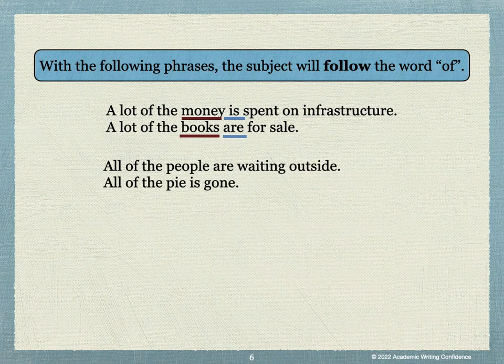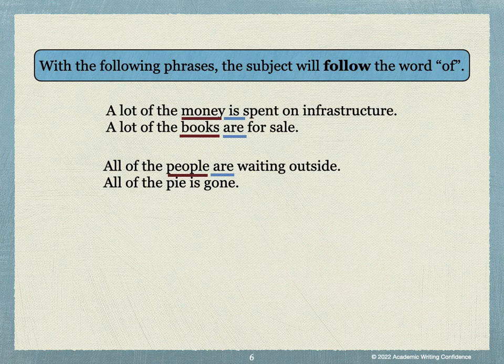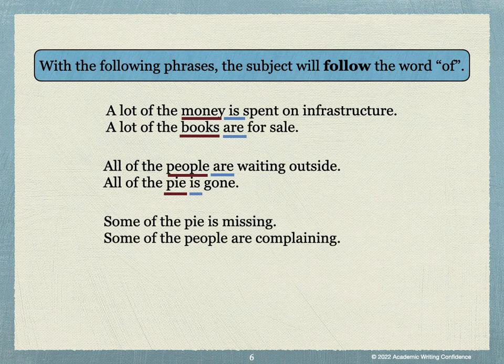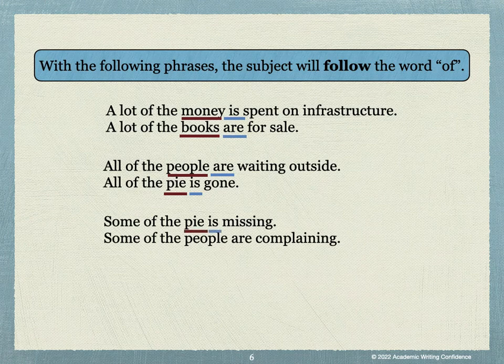In the next example, the phrase is all of: All of the people are waiting outside. All of the pie is gone. So, the people are, and the pie is. Another phrase is some of: Some of the pie is missing. Some of the people are complaining. Again, the subject-verb agreement would be the pie is, and the people are.